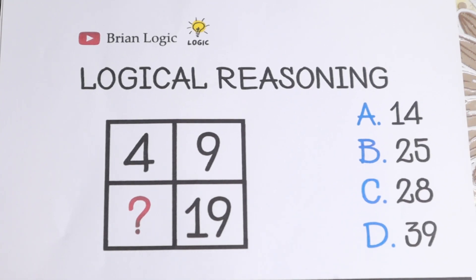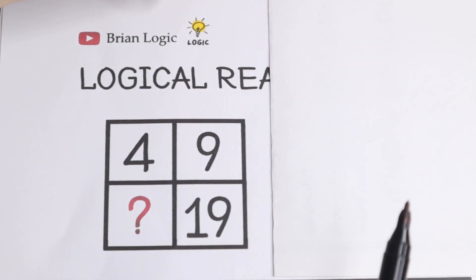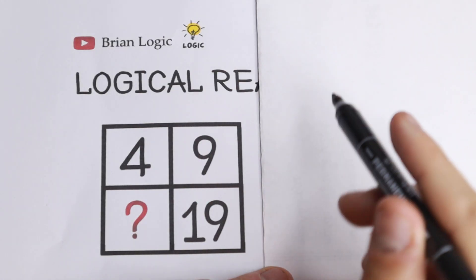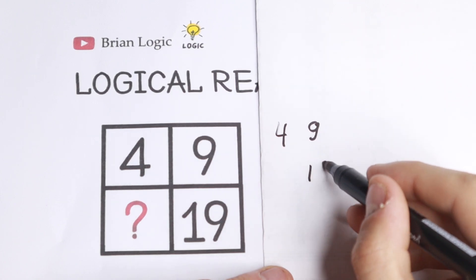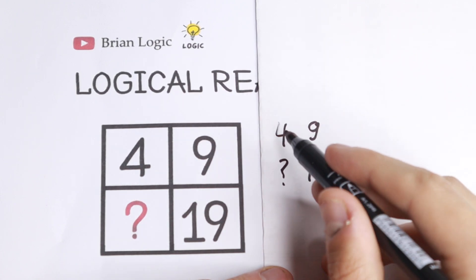We have 4, 9 and 19. So let's start, think right here. We have 4, 9, and right here we have 19, and we need to find this number.